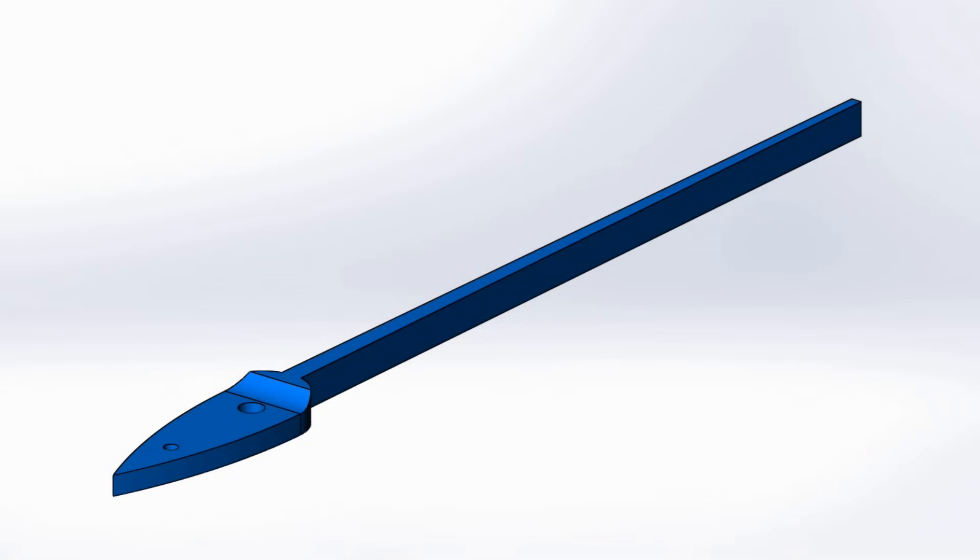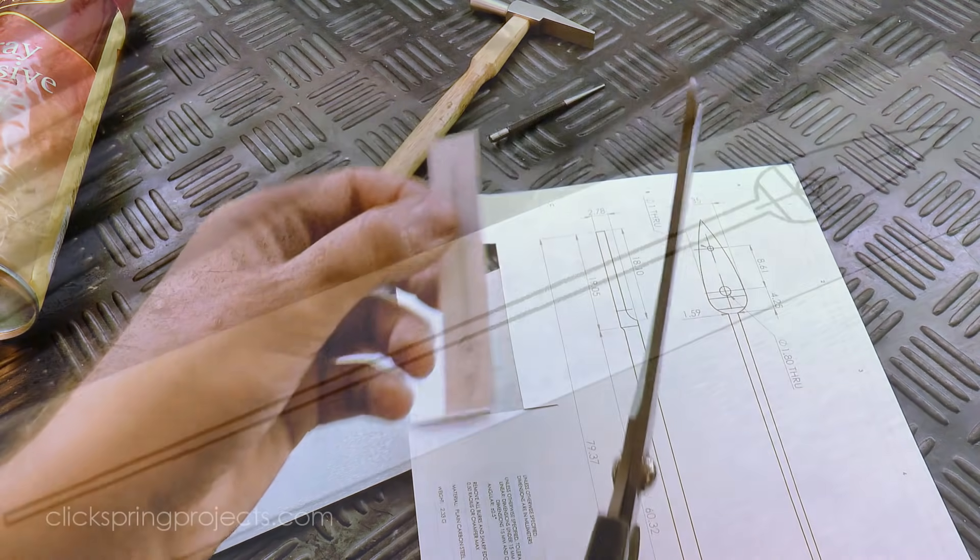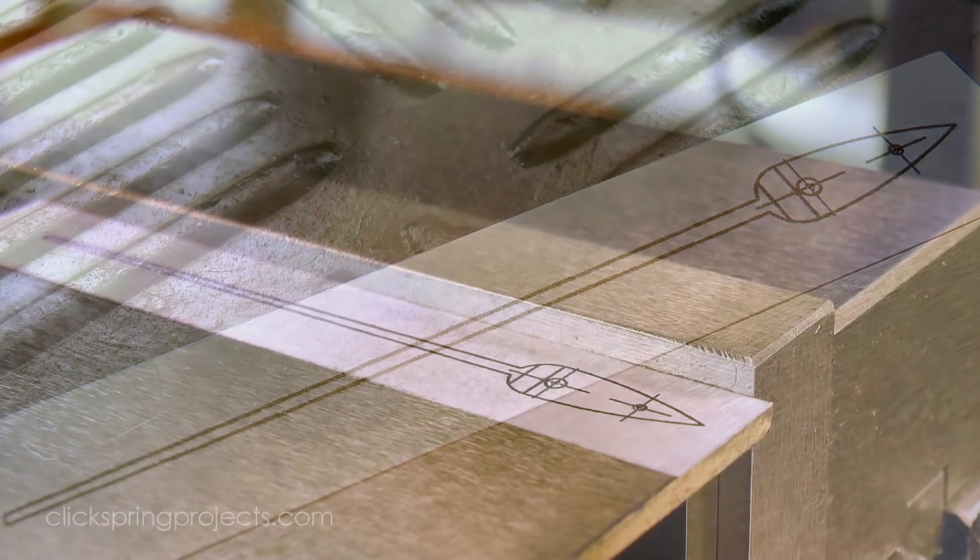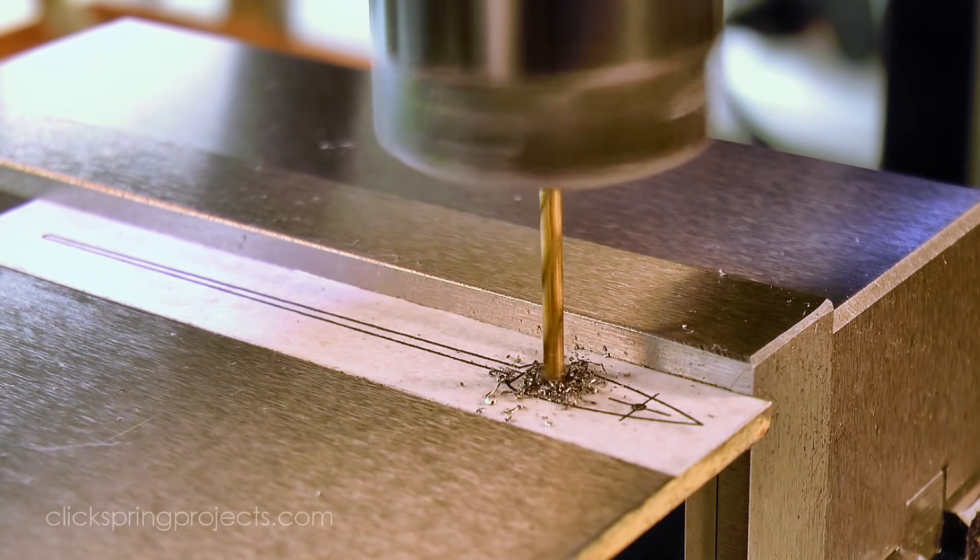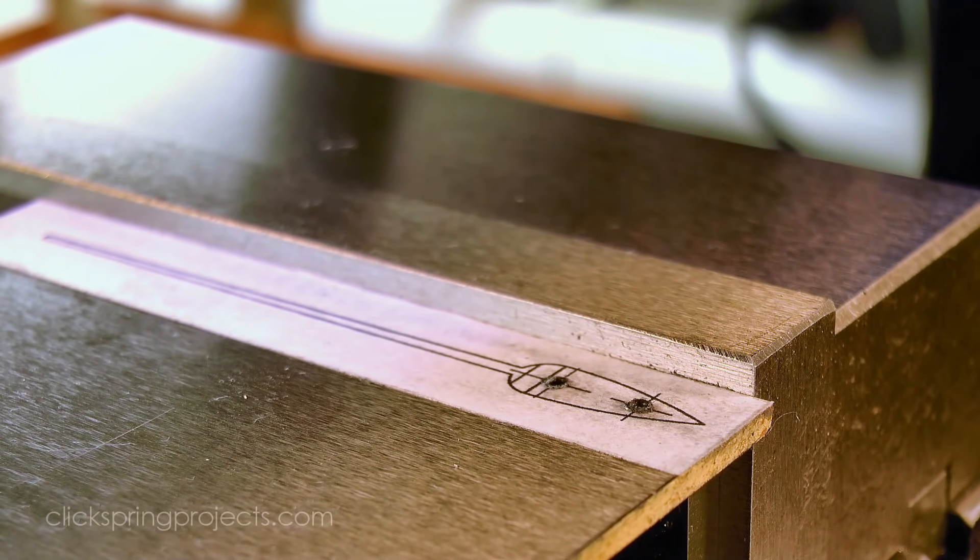Next up is the click spring, which was made in a similar way, starting with marking it out on the raw stock. Now there are two holes that need to be drilled. One is for the screw that holds it in position, and the other is for a tapered steady pin to locate the click spring precisely on the front plate.